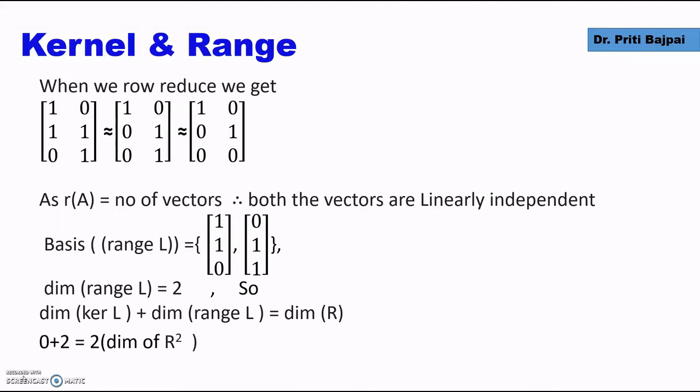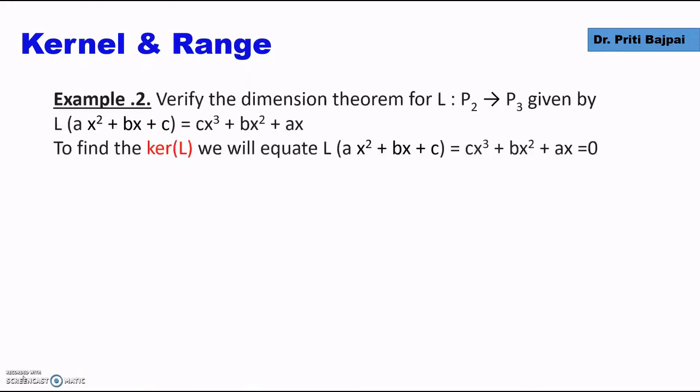We see that the dimension theorem is satisfied. The dimension of kernel is 0 and the dimension of range is 2. Adding gives 2, which is the dimension of R².